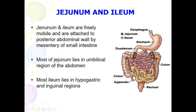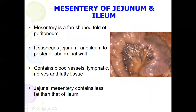There is no clear demarcation between the jejunum and ileum — there is a gradual change from one to another. Most of the jejunum lies in the umbilical region, while the ileum lies in the hypogastric and inguinal region.